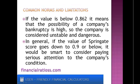If the value is below 0.862, it means that the possibility of a company's bankruptcy is high, so the company is considered unstable and dangerous. In general, if the value of the Springate score goes down to 0.9 or below, it would be smart to consider paying serious attention to the company's condition.